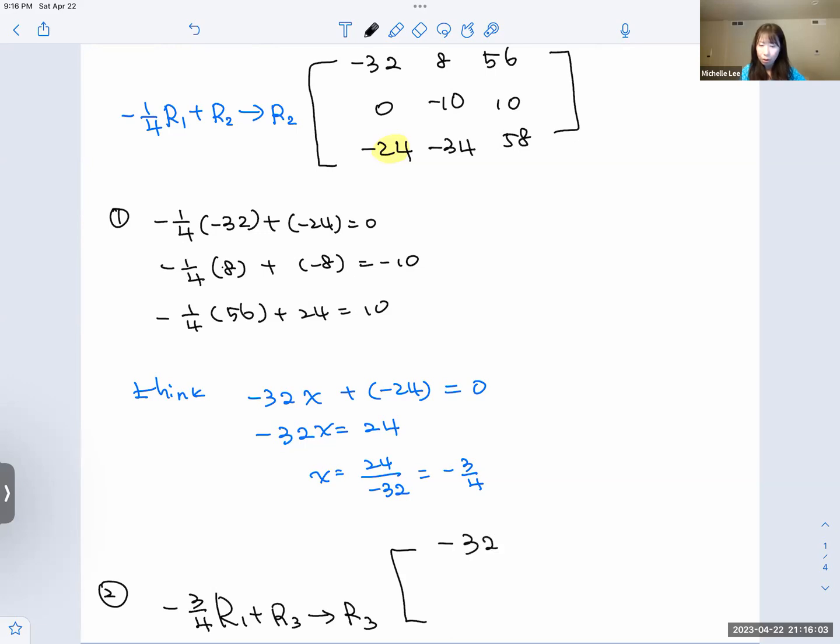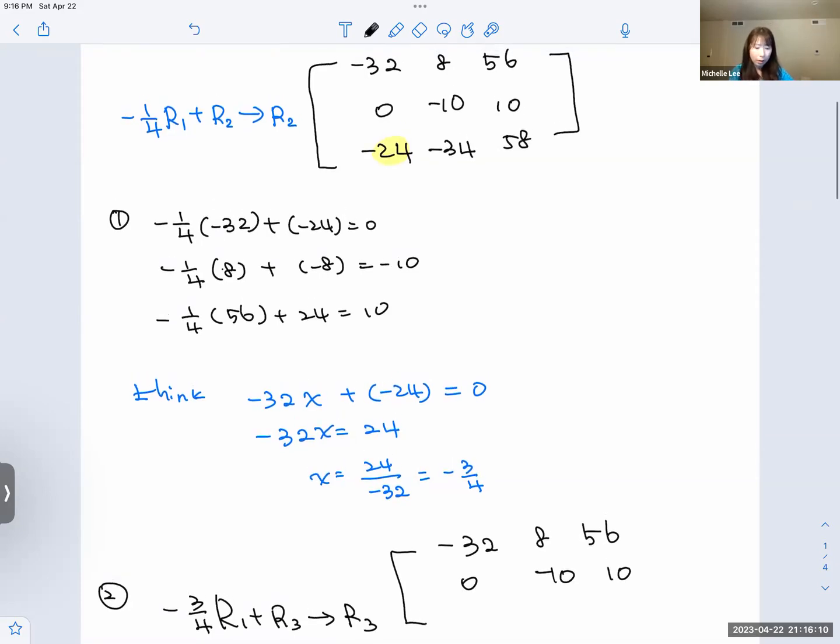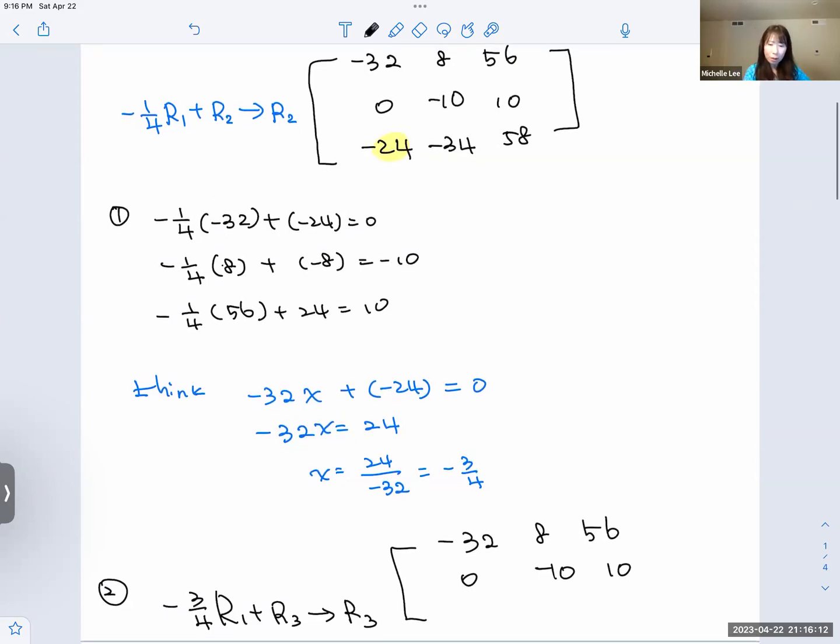We have a negative 32, 8, 56, 0, negative 10, positive 10. Let me write them for you. We have a negative 24, negative 34, 58. We multiply by negative 3/4 for R1. So let's do that.